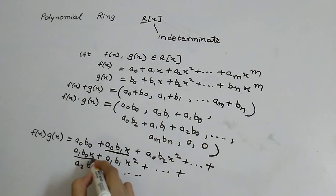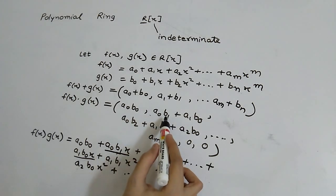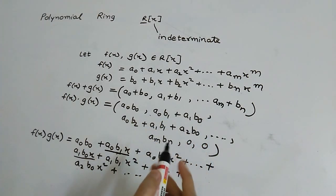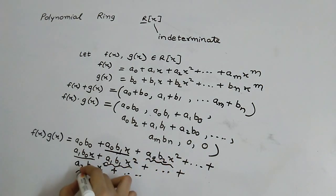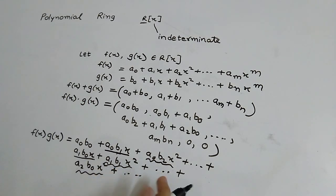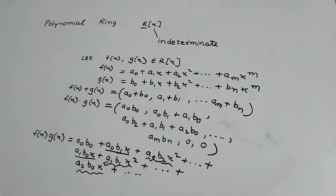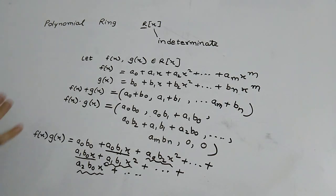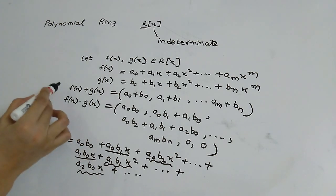The polynomial ring R[x] is the set of all polynomials over a ring R, and it is itself a ring under the operations of addition and multiplication as defined here.